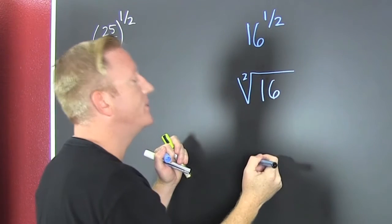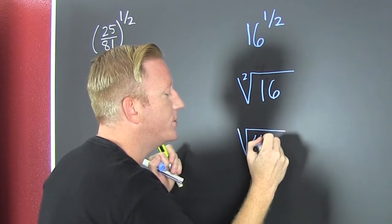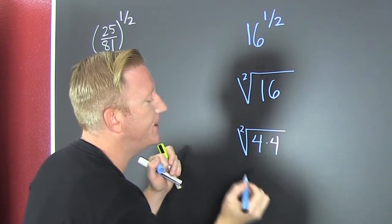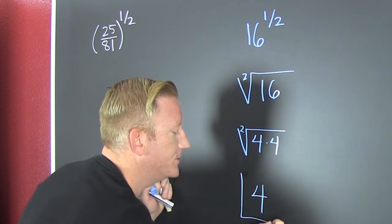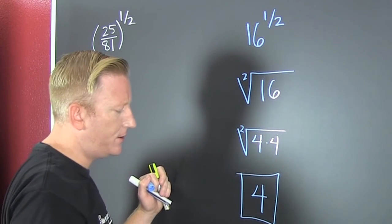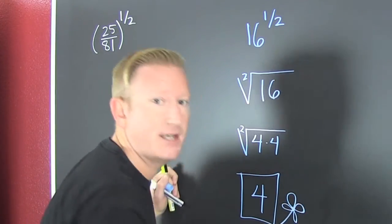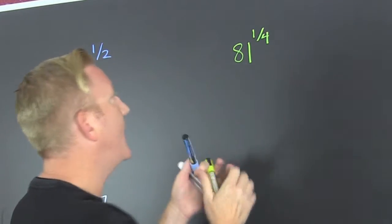And then the 16 in there. So then you're looking at the square root of four times four. Now you want pairs because that's a two right there, so I have a pair of fours, so one four comes out and you're done. Box and flower, what's next?